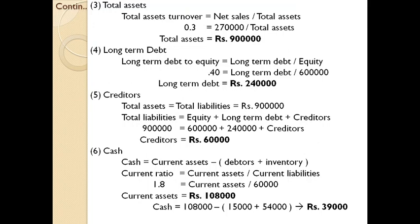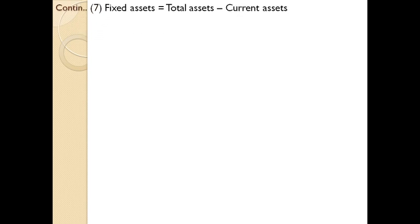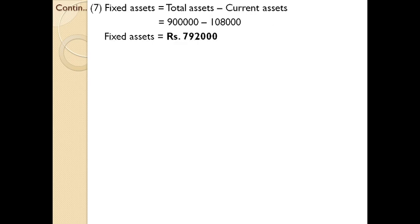We are almost at the end of the balance sheet. Finally, we need to find fixed assets. Since we already have total assets (9 lakhs) and current assets (1,08,000), fixed assets = total assets − current assets.